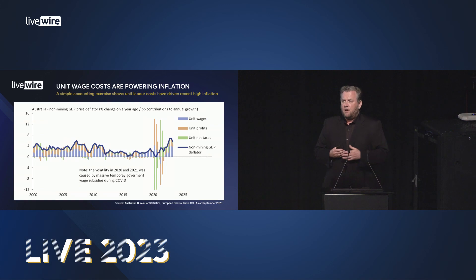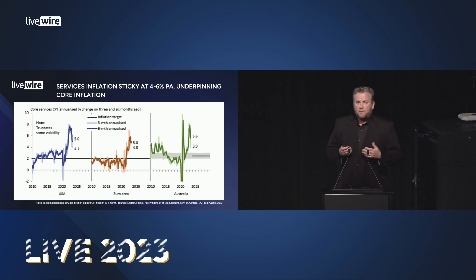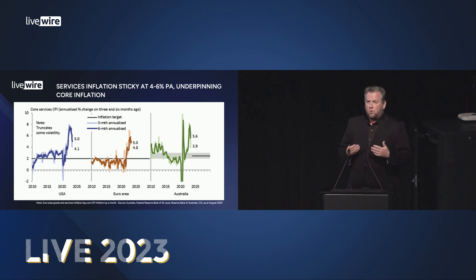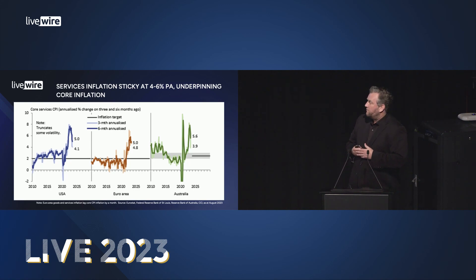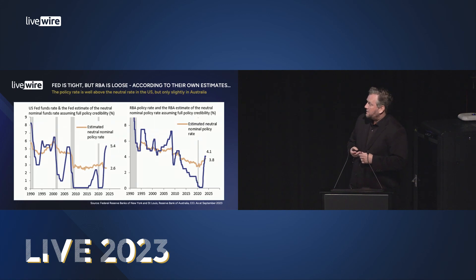The key driver of inflation today in Australia is elevated wages coupled with persistently poor productivity, and that's also showing up on the demand side of the inflation data. Looking at demand-side services inflation in Australia, the US and Europe, we see all the same problems of sticky, stubborn, recalcitrant services inflation running at about 4 to 6% a year, likely to power ongoing core inflation that will be multiples of central bank targets.